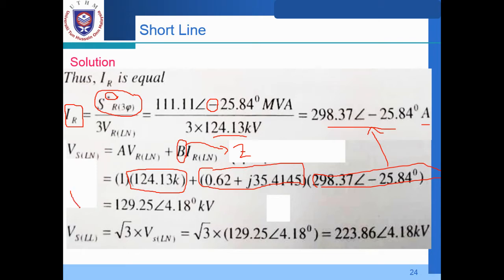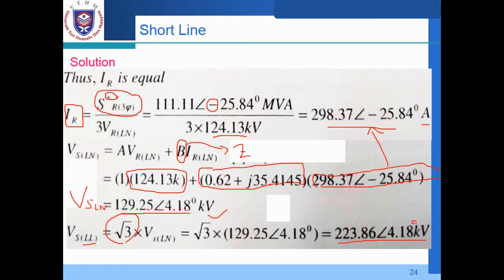Finally, we obtain the sending end voltage per phase: VSLN equals 129.25 kV at a phase angle of 4.18 degrees. To convert to line-to-line voltage, multiply by square root of 3. The sending end line-to-line voltage equals 223.86 kV at 4.18 degrees.